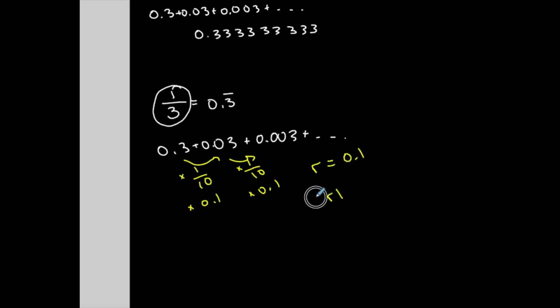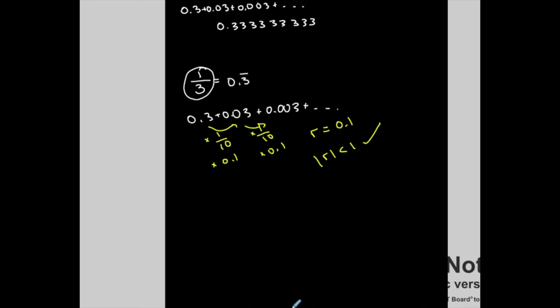So if you recall, it satisfies that requirement such that the absolute value of the common ratio is less than one, which means that I could find the sum of this infinite geometric series. So let's find that sum.